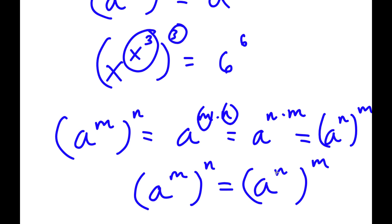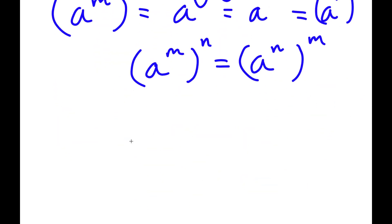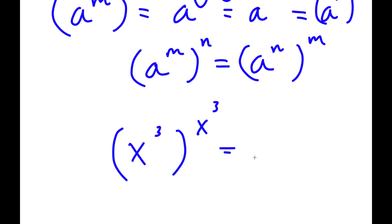So this is the same as a to the power of n to the power of m — if I switch these two places I get x to the power of 3 to the power of x to the power of 3, which is equal to 6 to the power of 6.